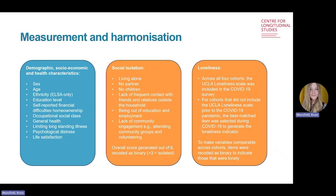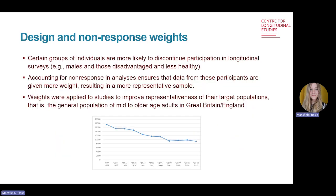For all cohorts, the COVID-19 survey included the three-item UCLA loneliness scale. For some cohorts, only individual items were included in the prior sweep, so we best-matched items prior to and during the pandemic to create binary loneliness indicators. We know that certain groups — such as males and those from more disadvantaged and less healthy backgrounds — are more likely to discontinue participation in longitudinal studies, so it was important to account for non-response. Item non-response was relatively low; we decided not to impute data, but we applied design weights where applicable and generated non-response weights for the COVID sweeps.